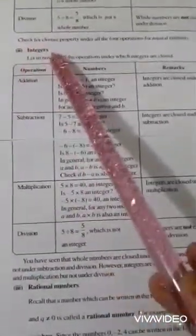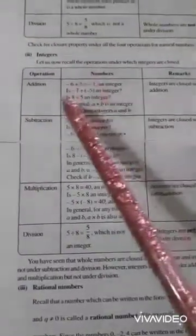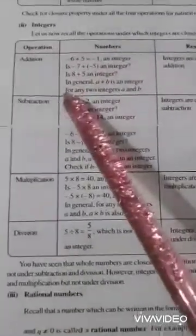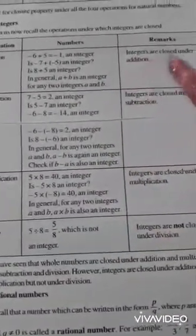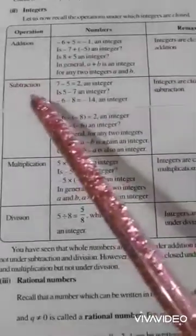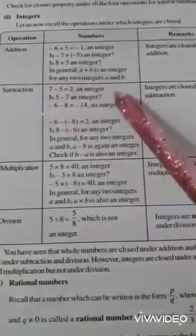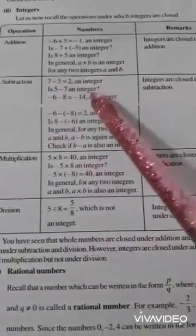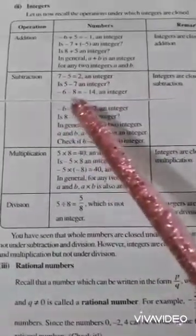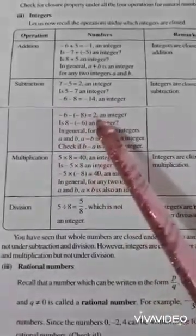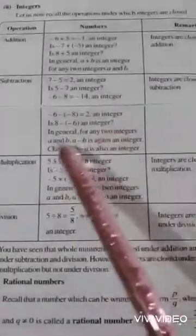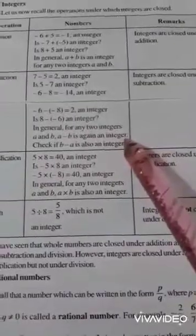Next, for integers. Operation addition: -6 + 5 = -1, which is an integer. -7 + (-5) also gives an integer. In general, A + B is an integer for any two integers A and B. So, integers are closed under addition. Next operation, subtraction: 7 - 5 = 2, which is an integer. Also, 5 - 7 = -2, which is also an integer. Here, -6 - 8 = -14, which is also an integer. And -6 - (-8) = 2, which is an integer. So, for any two integers A and B, A - B is again an integer. So, integers are closed under subtraction.